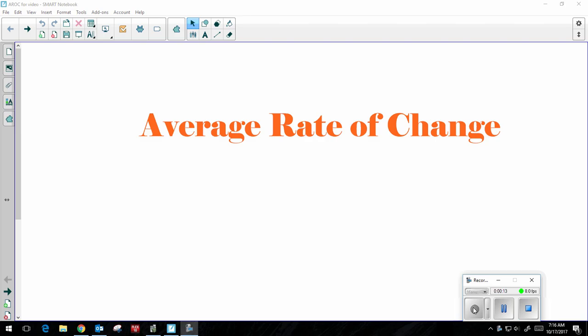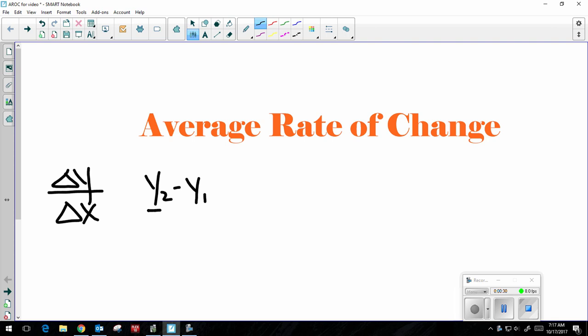So, average rate of change is really slope. It's the change in y over the change in x. Now, because we're going to be dealing with different functions, such as polynomial functions, there's no slope because a slope only pertains to one line. But we're going to be using the same formula, except we call it average rate of change.